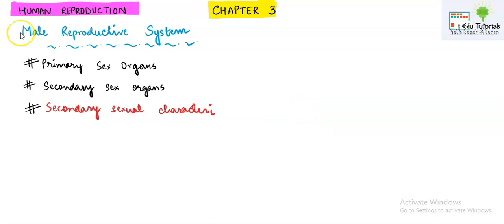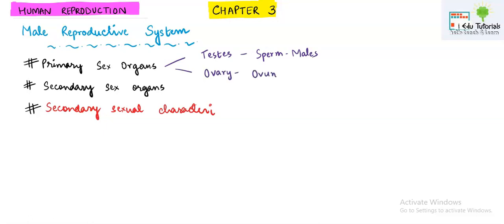Primary sex organs are the ones which directly help in gamete formation. If you talk about testes, they directly produce the gametes — the sperms — and they are produced in human males. If you talk about the ovary, primary sex organs are the ones which directly produce the gametes, so testes and ovary are both examples of primary sex organs.